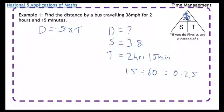So 15 minutes is 0.25, so 2 hours and 15 minutes is 2.25. And that's the number that you then put into your formula. So then it's distance equals 38 times 2.25.